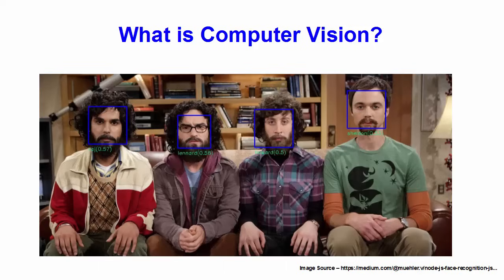Computer vision involves analyzing images to produce useful information. To give you some examples: a self-driving car can detect lanes using computer vision. Or you might have wondered how Facebook detects images when you upload images of you with your friends.